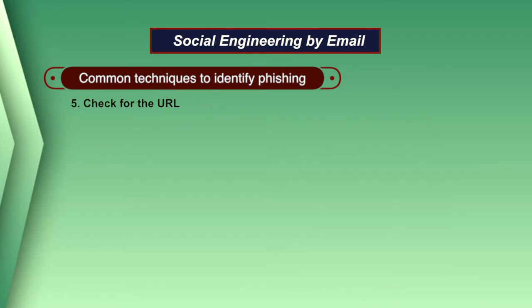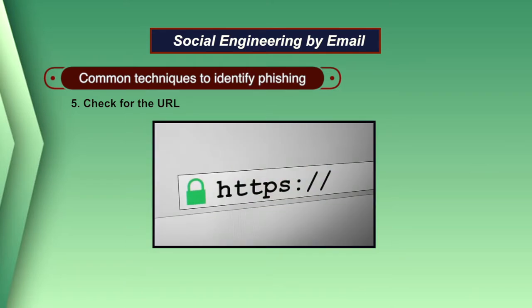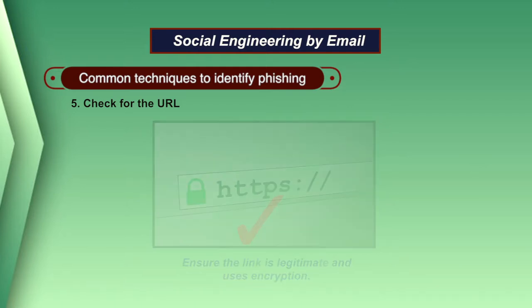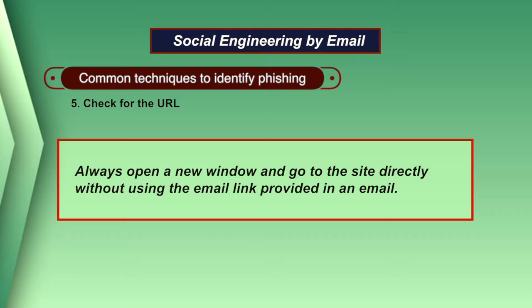Another technique to identify a phishing attack is to check the URL. Ensure the link is legitimate as it claims and uses encryption. This can be verified by looking at the HTTP protocol — a secure site uses HTTPS. However, to be extra cautious, it is best practice to always open a new window and go to the site directly without using the link provided in an email.